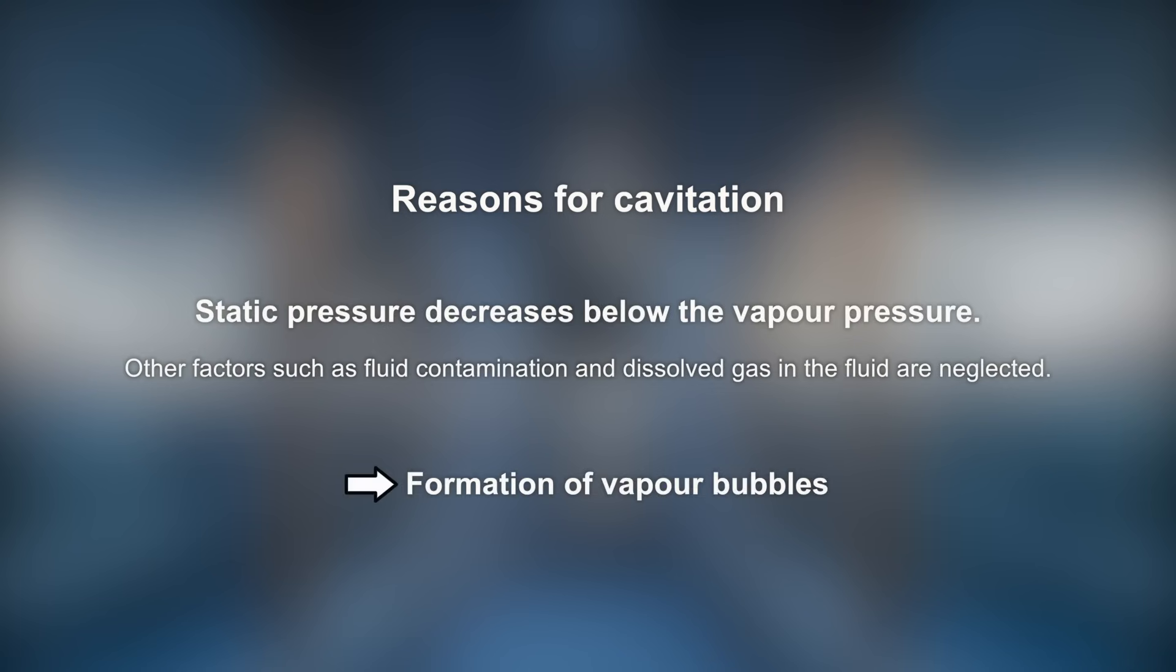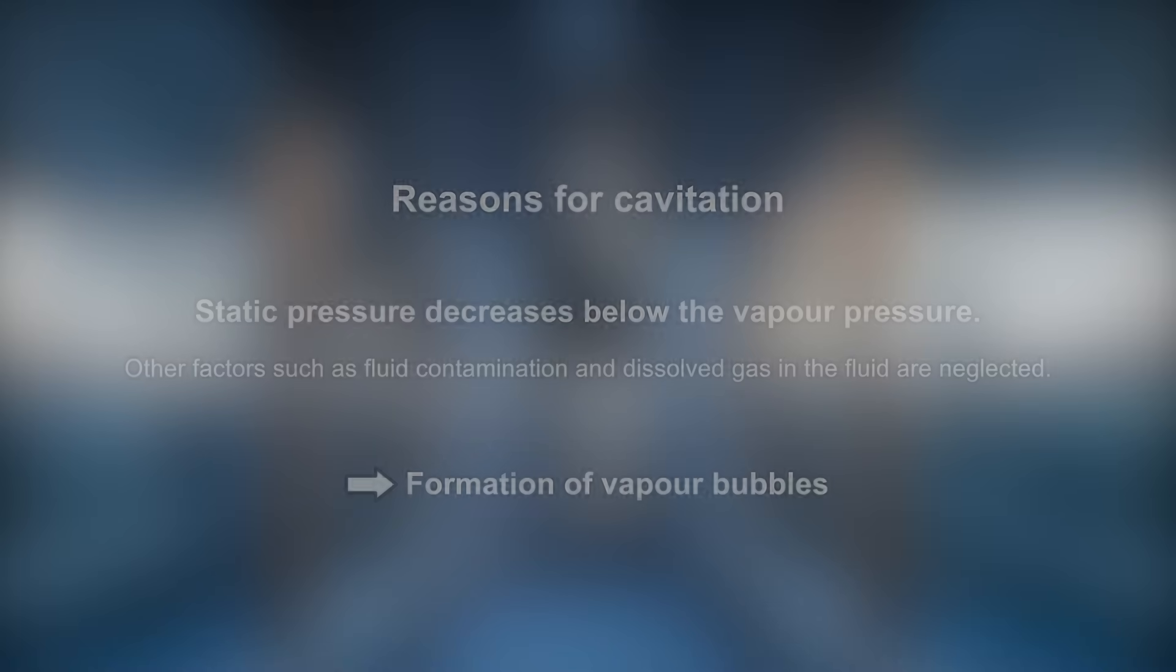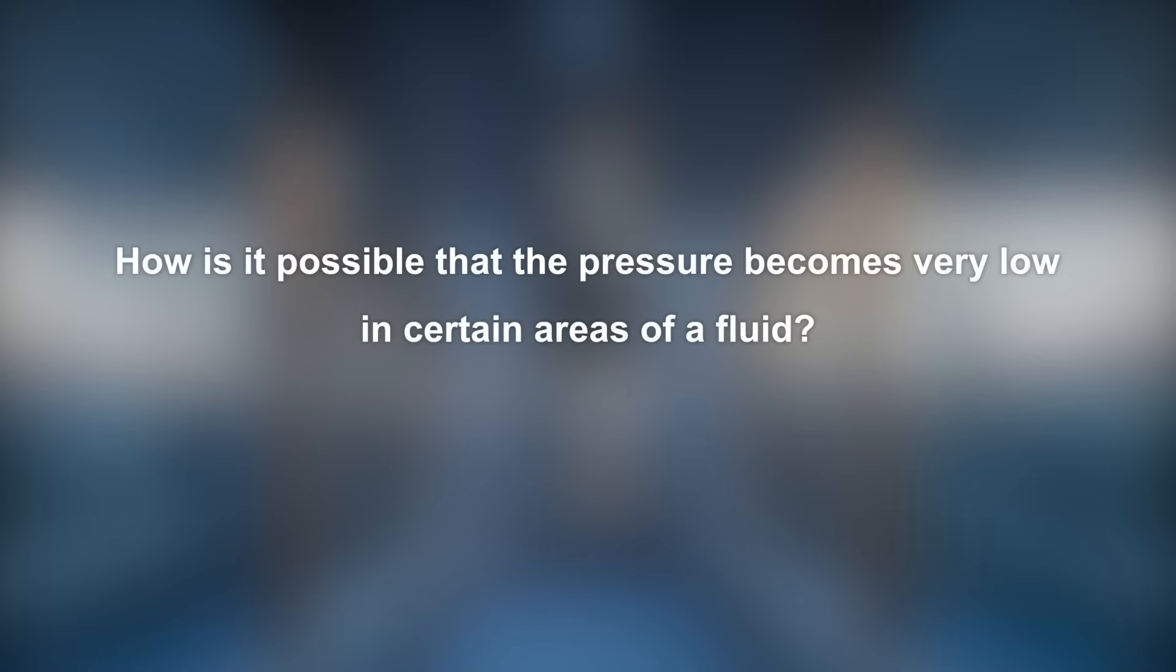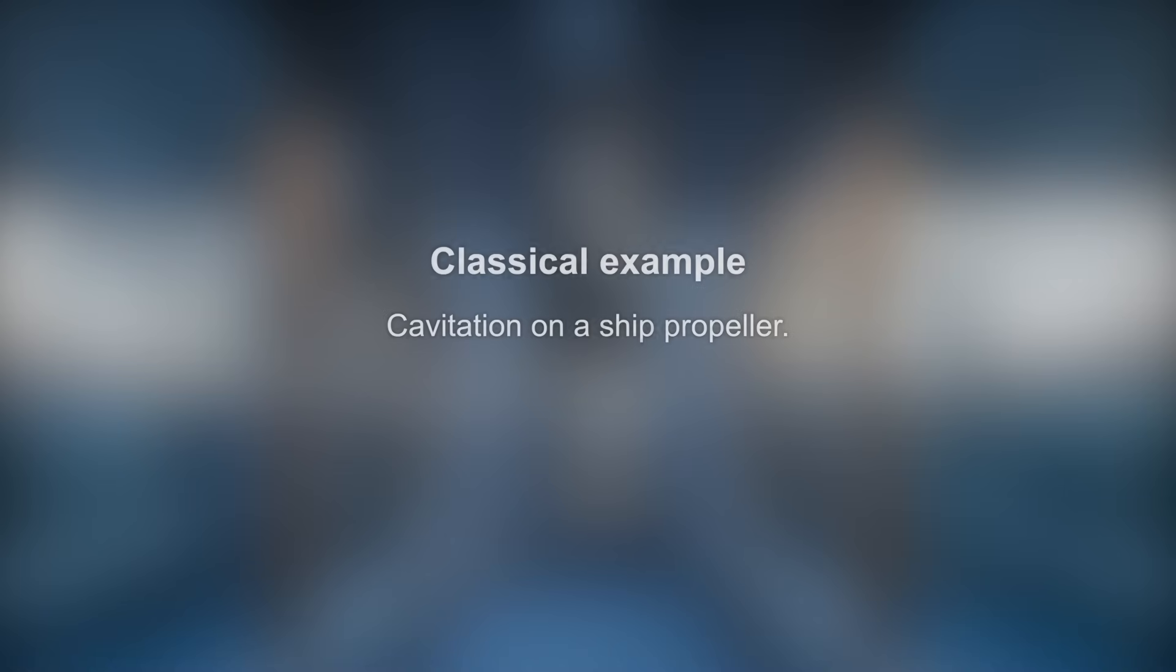Bubbles of water vapor form when the pressure in a certain location decreases below the vapor pressure. The vapor condensates back to liquid once the bubble has reached a location with a pressure above the vapor pressure. But how is it possible that the pressure becomes very low in certain areas of a fluid? Let's have a look at an example for illustration.